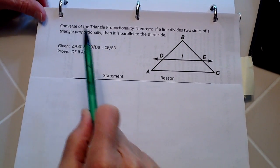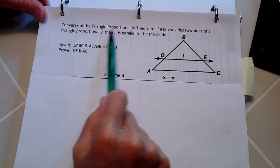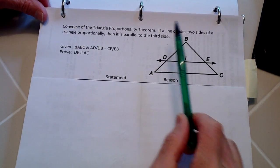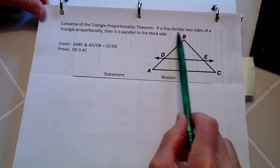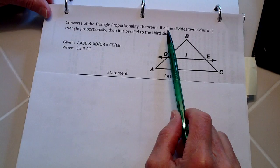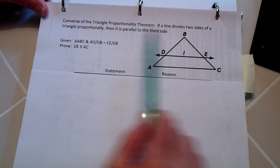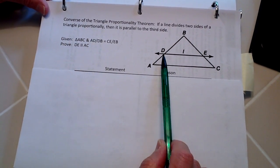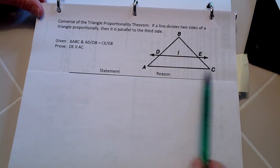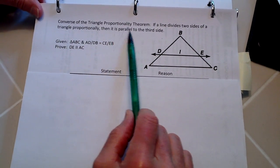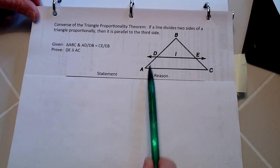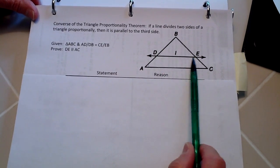Now we're going to prove the converse of the triangle proportionality theorem. Essentially what that says is if a line divides two sides of a triangle proportionally, here we have this triangle ABC, divides proportionally, then it is parallel to the third side, being this side right here.